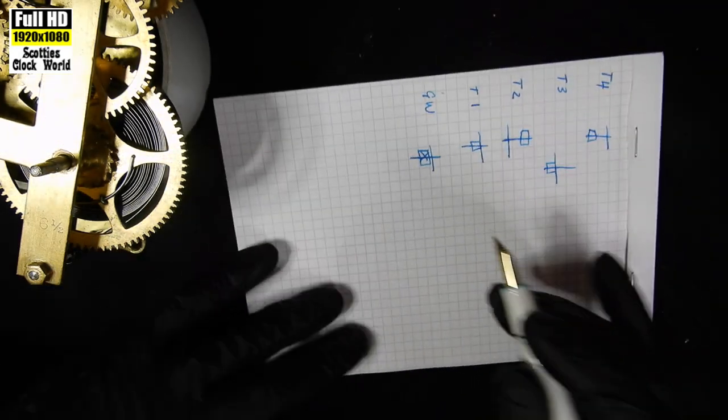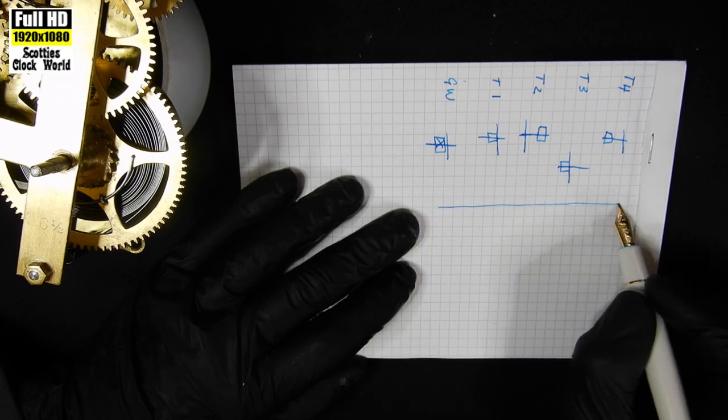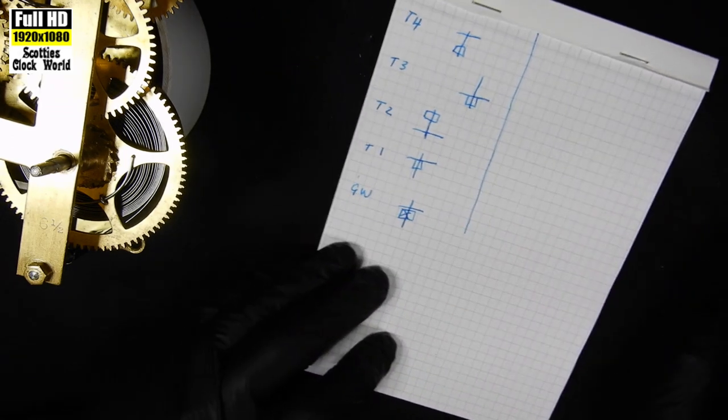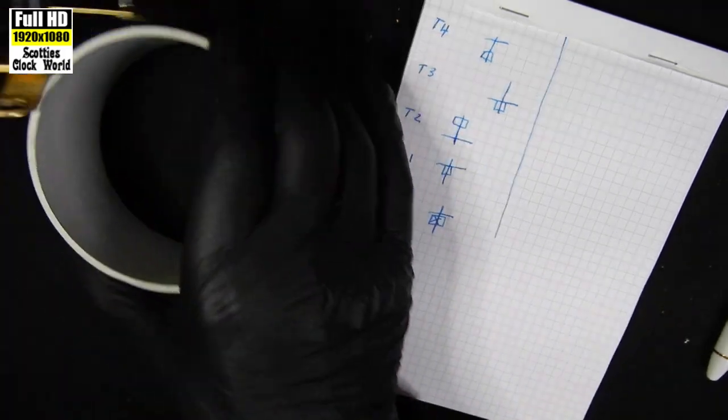I'll draw a line up the center of the page. Then we'll turn the movement over. We'll have a look at the other side.